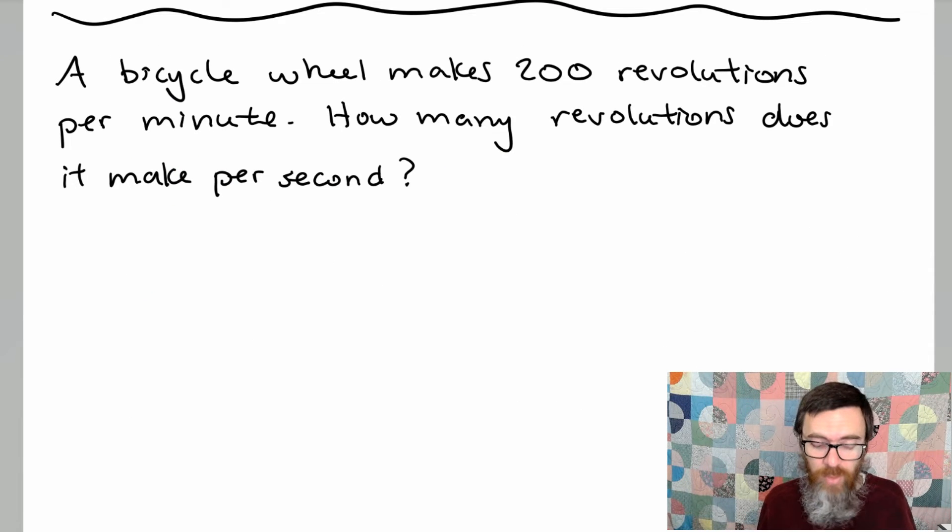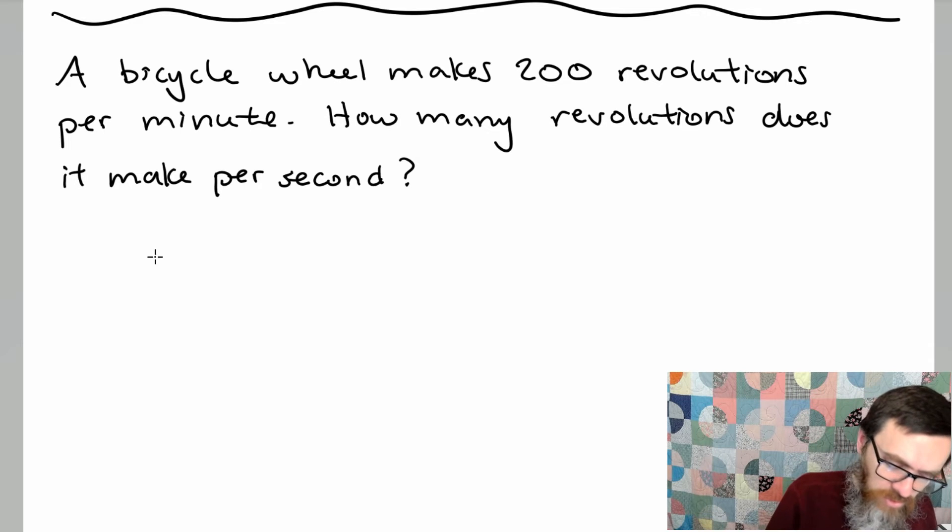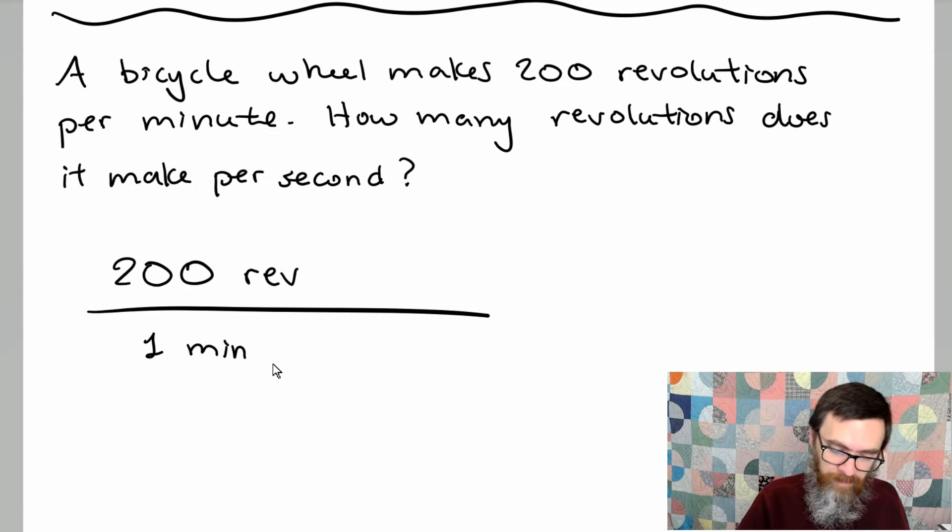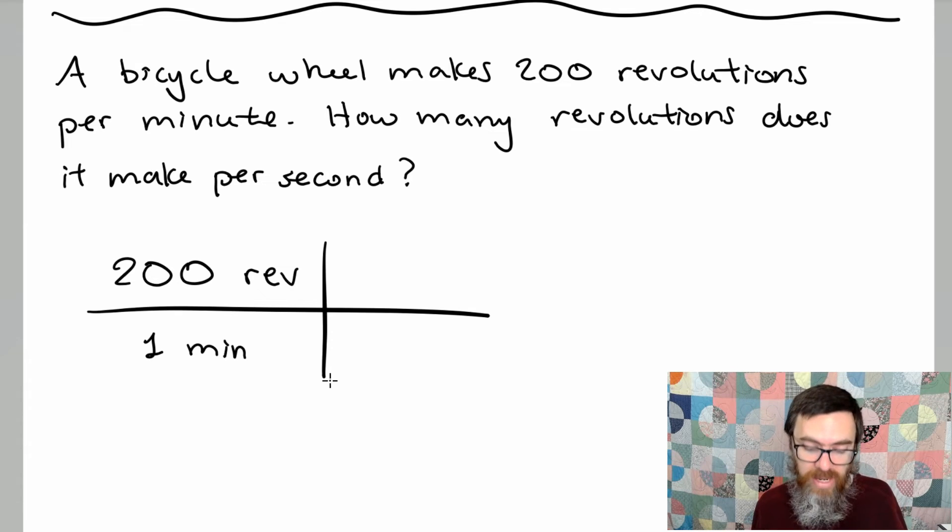In this next example we have a bicycle wheel that makes 200 revolutions per minute. How many revolutions does it make per second? So we can do the same thing we did in the last problem. Start off by writing this. We have 200 revolutions per minute. And we want to go to per second. So we still have revolutions so we don't need to worry about changing that. But we've got to change the minutes into seconds.